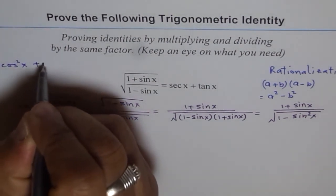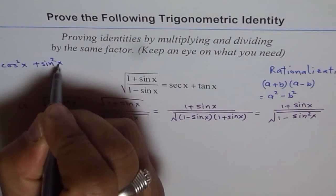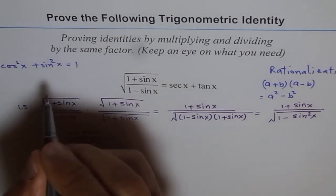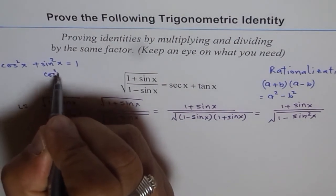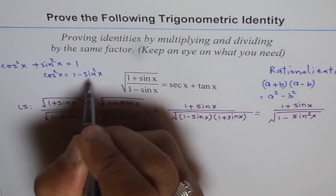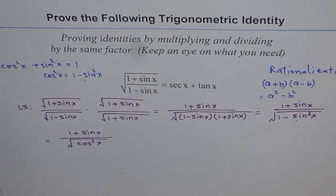Cos square x plus sin square x equals 1. So 1 minus sin square x would be cos square x. We use this here to get cos square x.